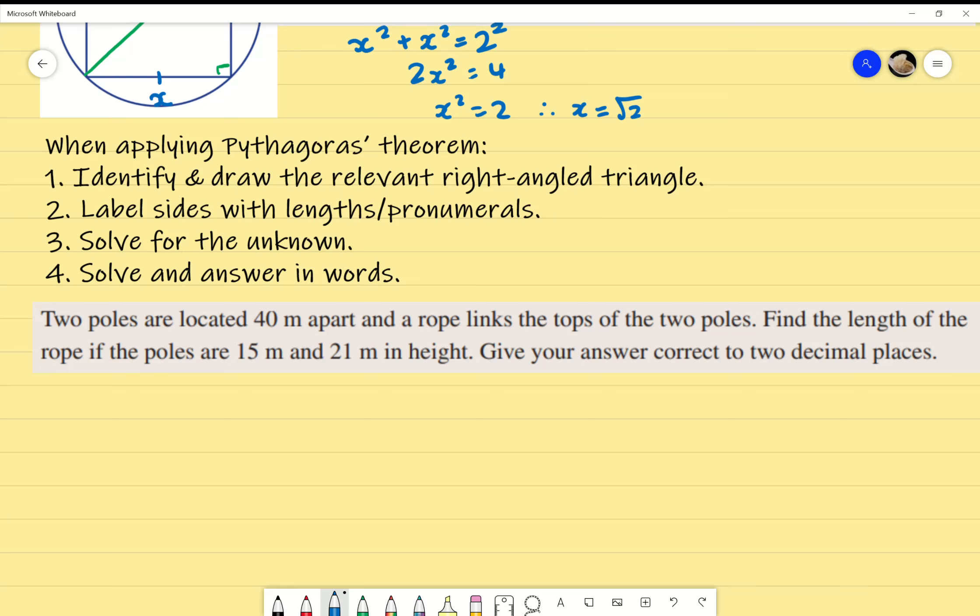Second thing you need to do is label the sides with either lengths or a pronumeral. If you don't know what it is, leave x, b, c, whatever it is you want to use, and then the other ones need to be side lengths. In almost every circumstance, you have two known and one unknown. Third thing you need to do is you're going to solve for the unknown value using the Pythagoras theorem. And finally, you're going to solve the answer and answer in words.